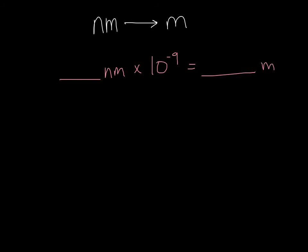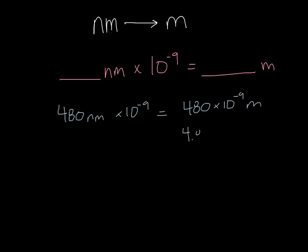That will give you your new number in meters. For example, if we have a wave that is 480 nanometers in wavelength and we want to convert that over, we just multiply by 10 to the negative 9th. That comes out to be 480 times 10 to the negative 9th meters — or if you put this into your calculator, it's 4.80 times 10 to the negative 7th meters.